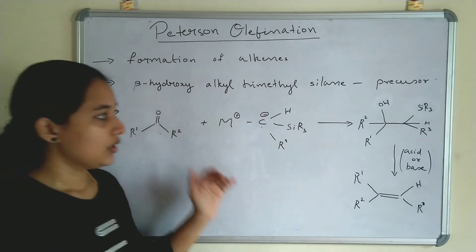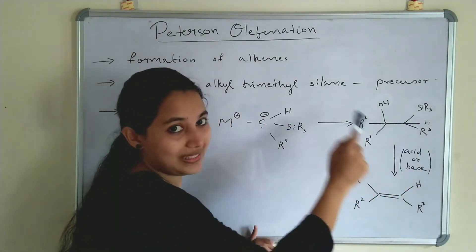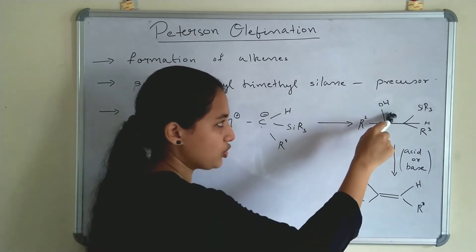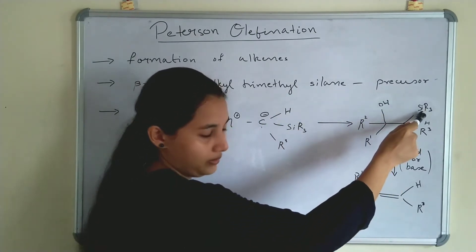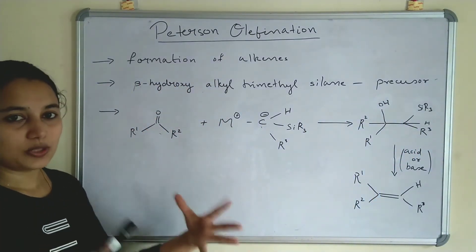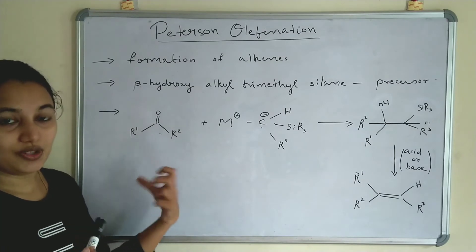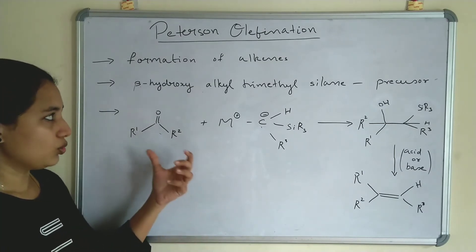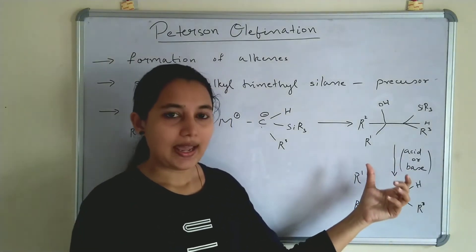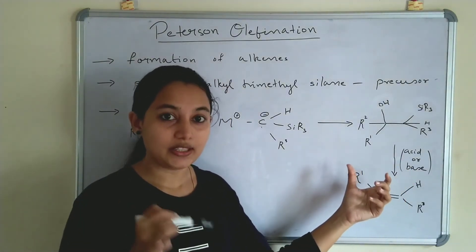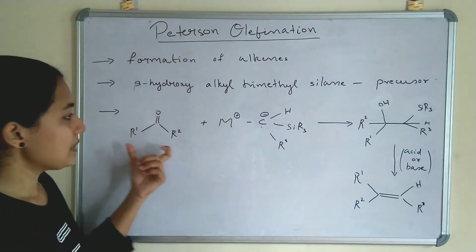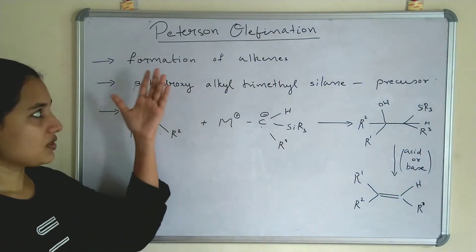What is this precursor? It is the beta-hydroxy-trialkylsilane — a hydroxyl group in the beta position and a trialkylsilane group. Peterson Olefination is the formation of alkenes, a reaction in which an alkene is formed through a mechanism in which acid or base is added, and the stereochemistry of the alkene depends upon this acid or base. This is the general mechanism of Peterson Olefination.